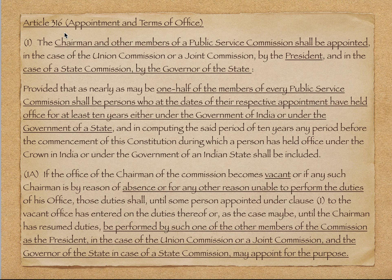Article 316 deals with appointment and terms of office. Clause 1 कहता है: Chairman and other members of the public service commission shall be appointed — in the case of the union by the president, or a joint commission — and in the case of state commission by the governor of the state. मतलब UPSC और joint commission के members और chairman appoint करेगा president, बट state public service commission के members और chairman appoint करेगा governor।